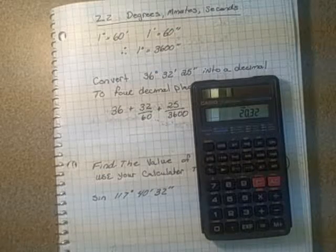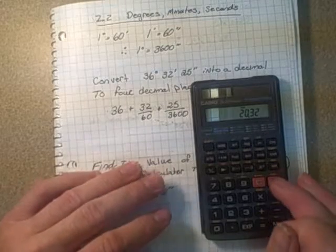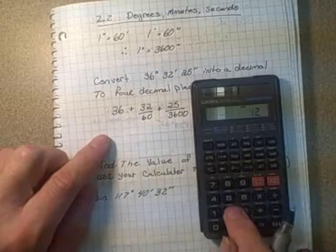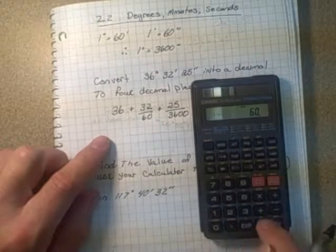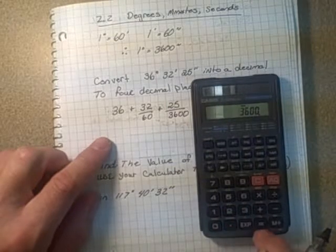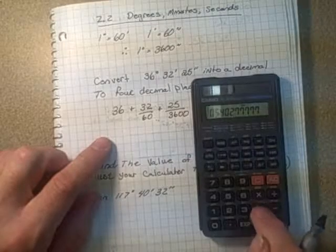I don't know if you can read the actual calculator, but that's all right. So what we do is we go 32 divided by 60 plus 25 divided by 3600 equals that plus 36.